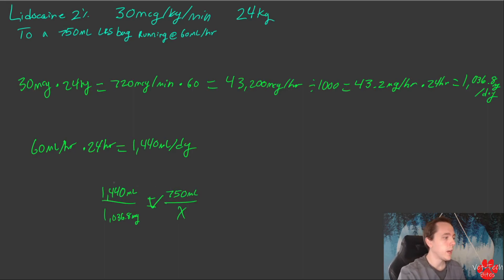750 ml times 1,036.8 mg equals 777,600 divided by 1,440, which gives us 540 mg. That's a more usable number and makes sense with the proportion. All that's left is to find how many ml that is. We take our milligrams and divide by the concentration, which is 2% or 20 mg per ml. So 540 divided by 20 equals 27 ml.